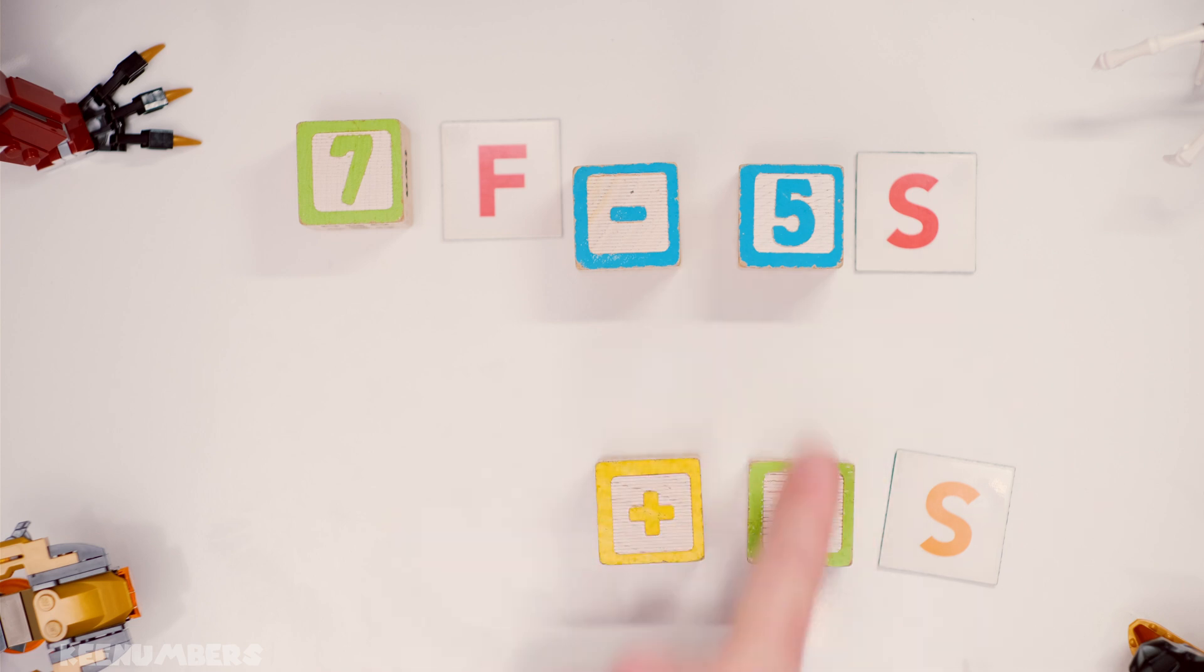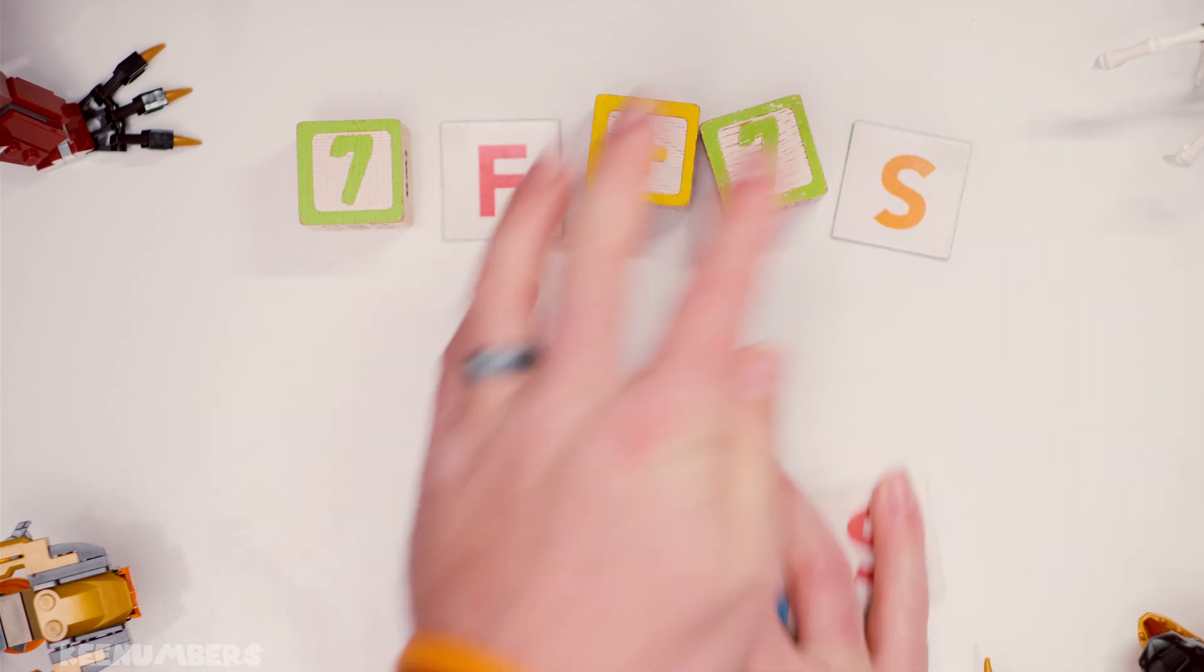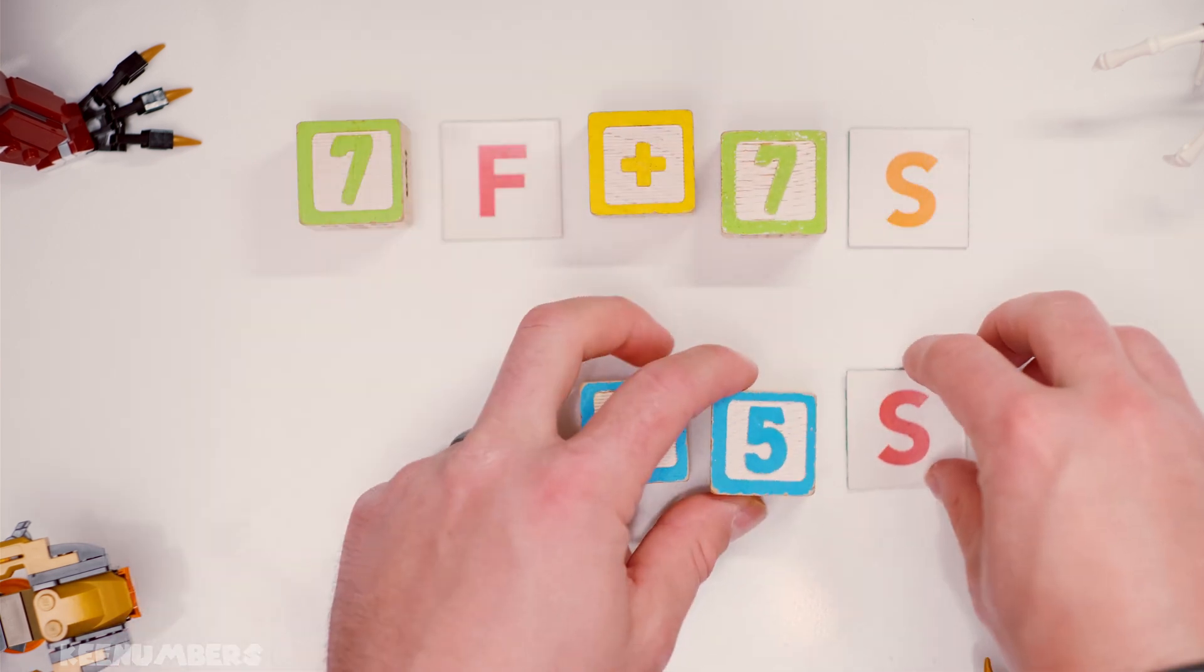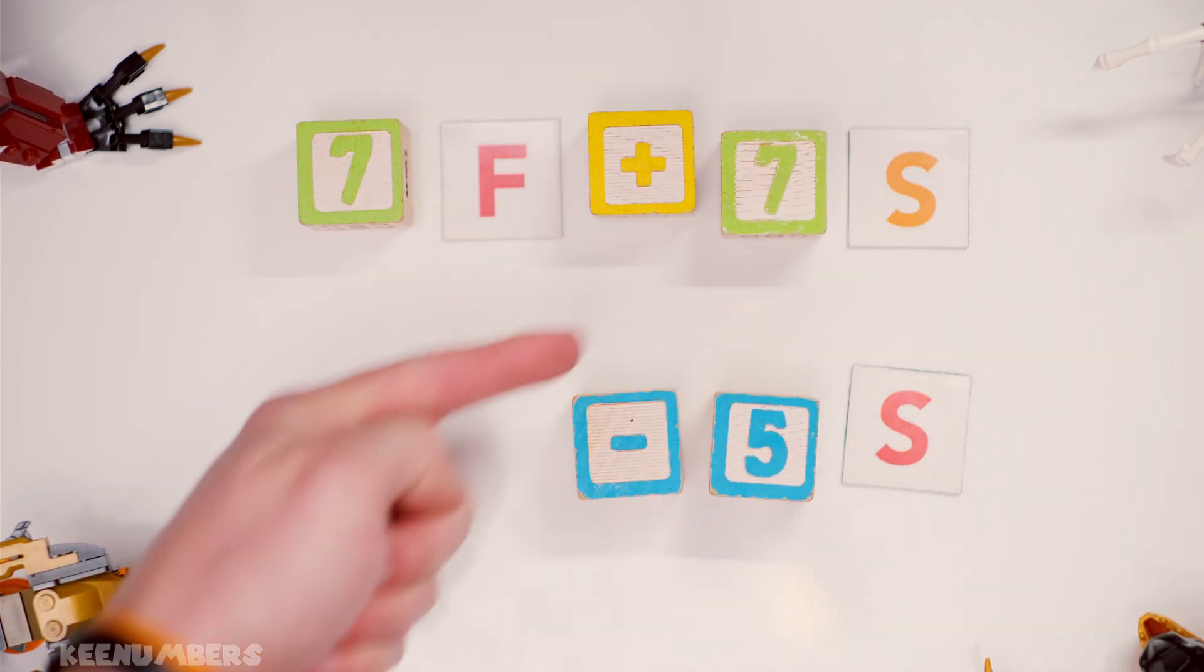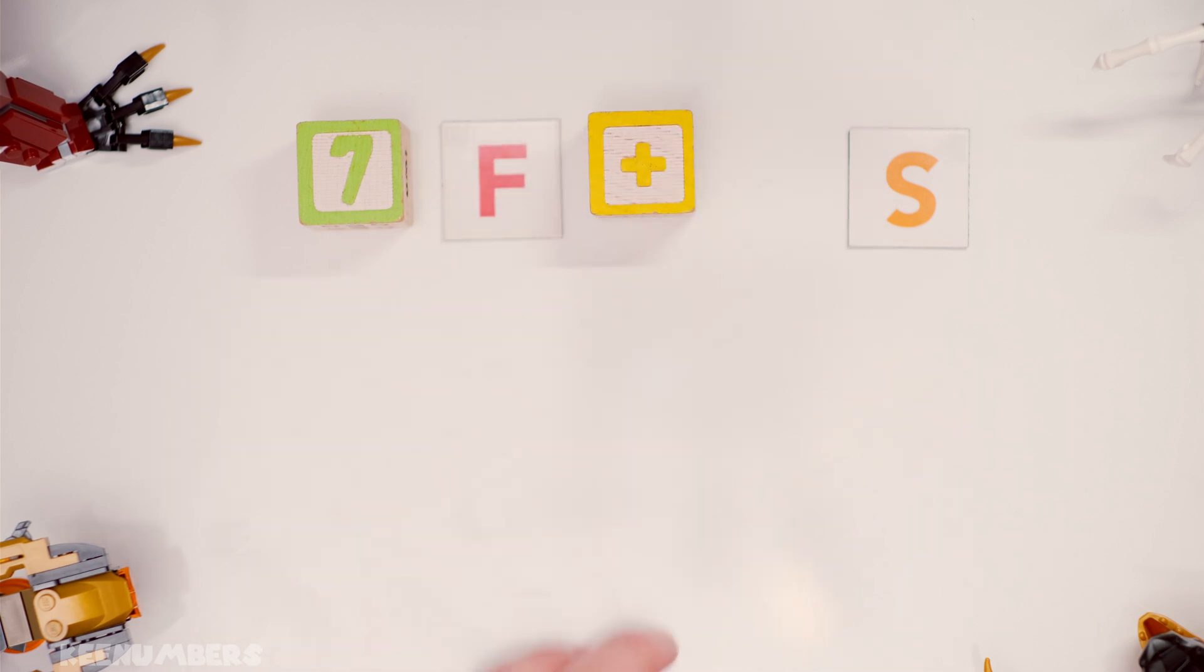So we have seven figures and then minus five plus seven squares. Don't get scared, let's just move it around. Seven squares take away five squares, well what's seven minus five? Too easy, that's just two. Two squares.